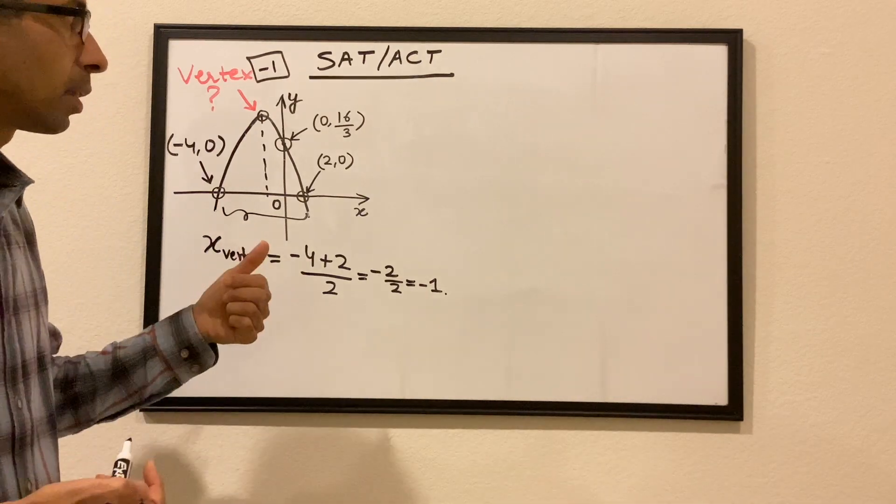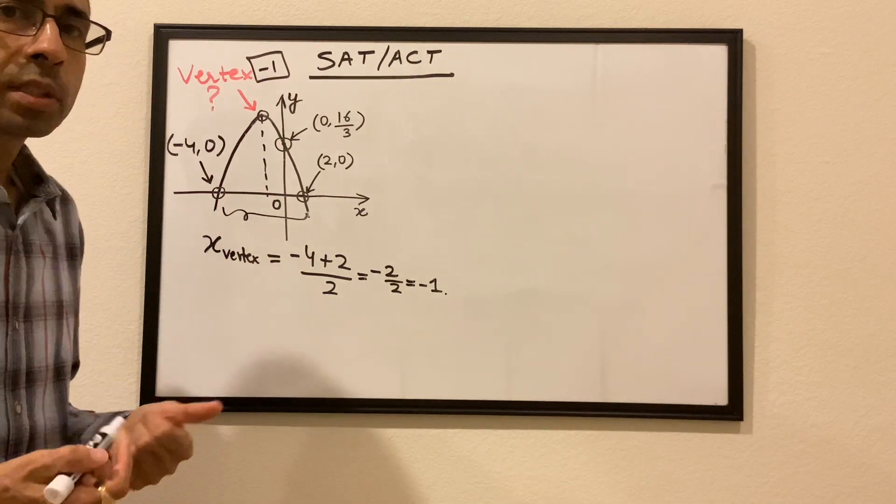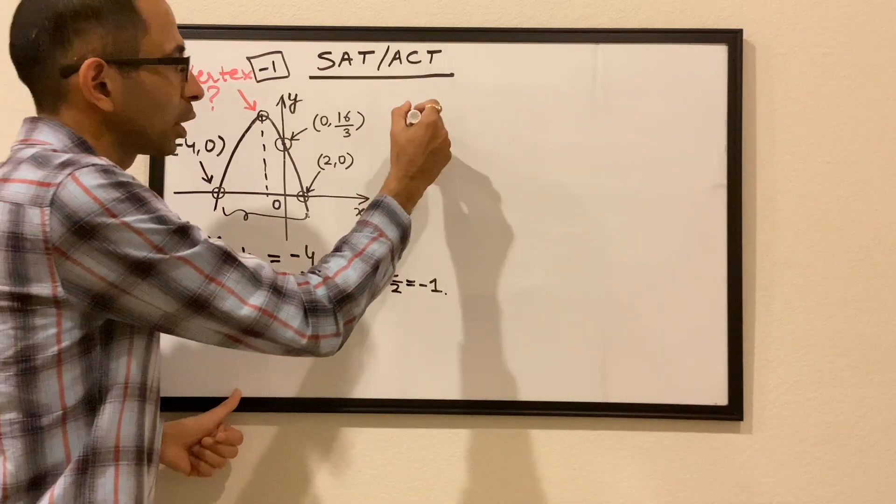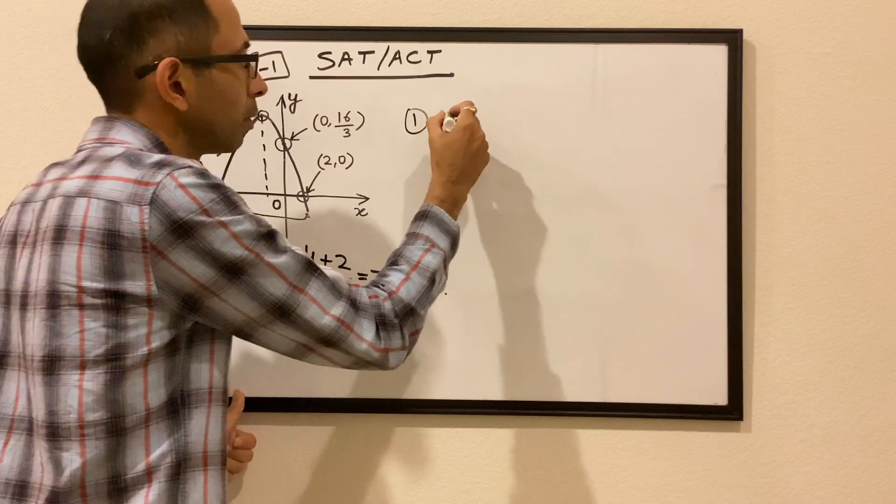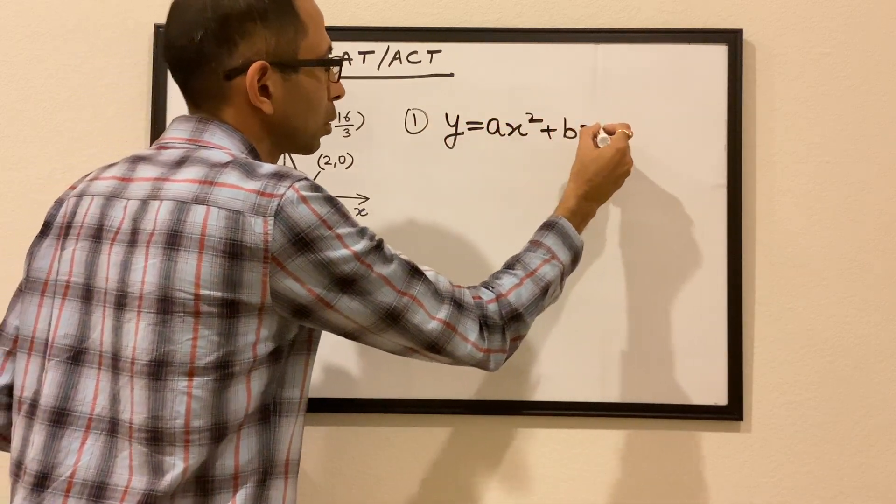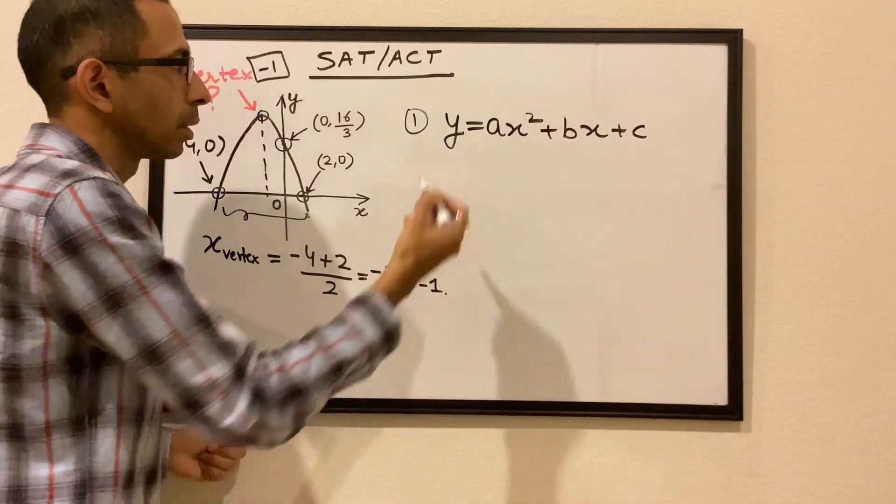Now, before we get started further, we need to understand what are the different ways in which we can represent a parabola. So the first form is the standard form, which is y equals ax² plus bx plus c. This is the standard form.